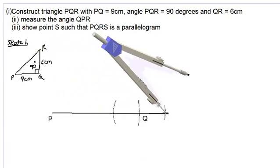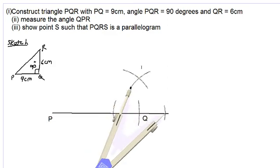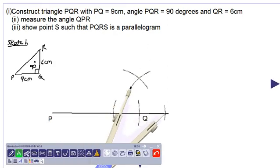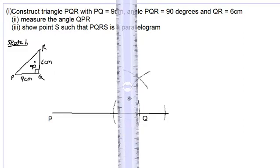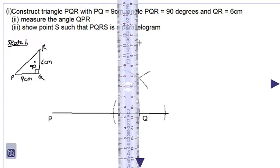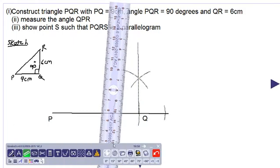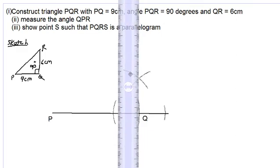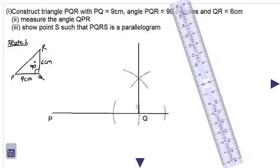We then move our point to the other point of intersection without changing the radius of the compass and make another construction arc. We now take out our long ruler and draw a line which connects the new point we have created to point Q. This line should be more than 6 centimeters in length. Remember we are supposed to have two shades of pencil when doing this. Let us draw a deeper line — this line will form a 90 degree angle at point Q.